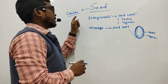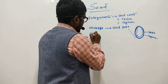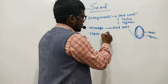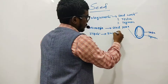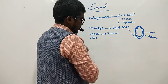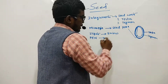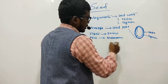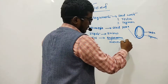After fertilization, the fusion of male and female gametes results in the zygote, which further develops into the embryo of the seed. The primary endosperm nucleus (PEN) further develops into the actual endosperm.